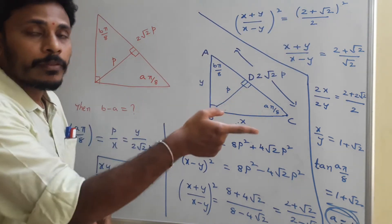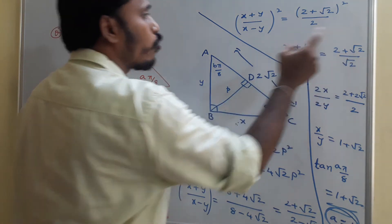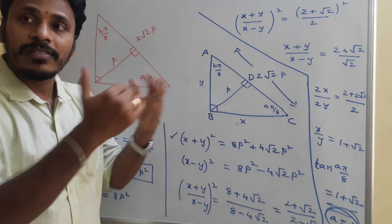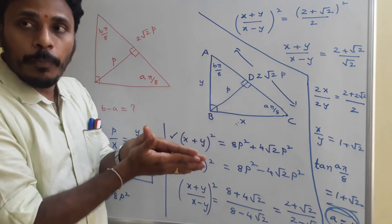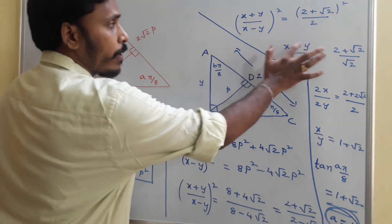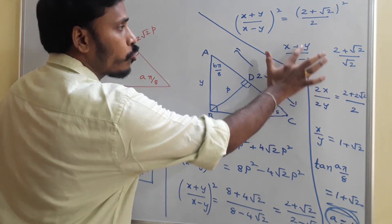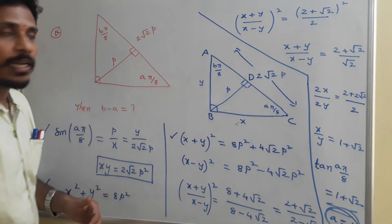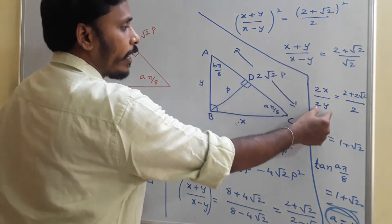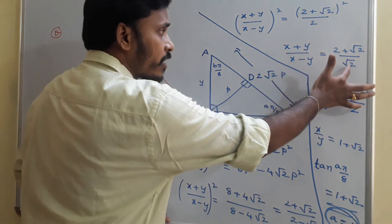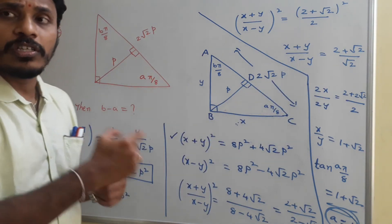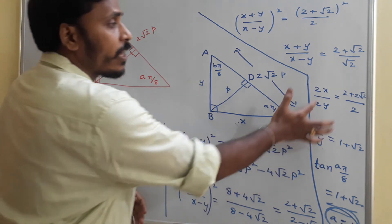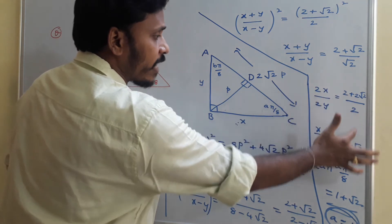Remove the square root on both sides: (x+y)/(x−y) = (2 + √2)/√2. Now apply the componendo and dividendo rule — take (numerator + denominator)/(numerator − denominator) on both sides. On the left: numerator plus denominator gives 2x, and numerator minus denominator gives 2y. On the right: (2 + √2 + √2)/(2 + √2 − √2) = (2 + 2√2)/2. Cancelling the 2s gives x/y = 1 + √2.